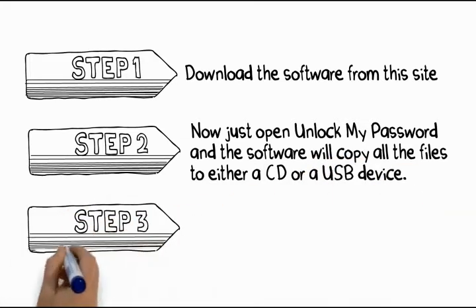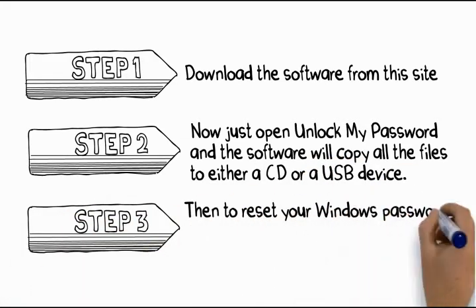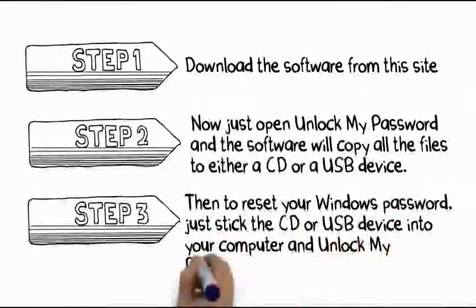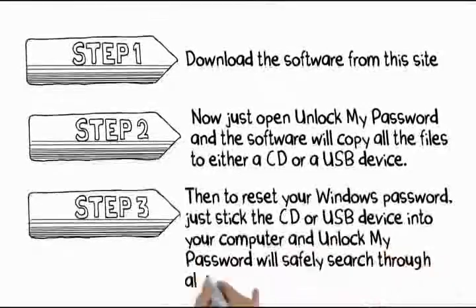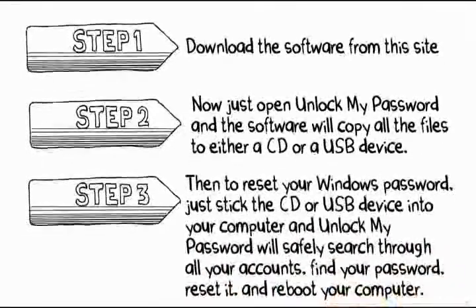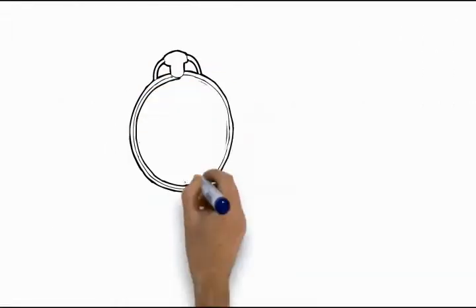Step 3: Then to reset your Windows password, just stick the CD or USB device into your computer and Unlock My Password will safely search through all your accounts, find your password, reset it, and reboot your computer. It's that easy.